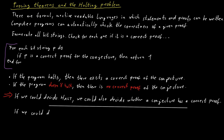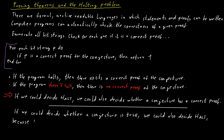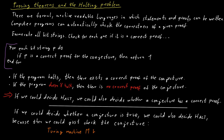On the other hand, if we had some way of designing a Turing machine that could decide whether a conjecture is true or not, we could also solve the halting problem. We would simply write down the conjecture 'Turing machine M halts on input x.' If we could decide whether this statement is true or not, we could decide whether M halts on x, because that is exactly the statement itself. To summarize: if we could solve the halting problem, we could decide whether a given conjecture has a proof or not; and if we could decide whether a conjecture is true or not, we could solve the halting problem.